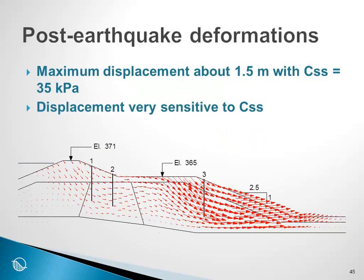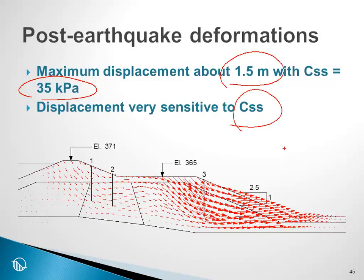Following the same procedure as in the Lower San Fernando Dam, we performed a stress redistribution analysis in SIGMA. The maximum displacement computed is approximately 1.5 meters when the undrained steady-state strength is around 35 kPa. Displacement is very sensitive to the undrained strength used. This is described in the Upper San Fernando Dam example shipped with the software, and there is a research basis for the undrained steady-state strength value used.